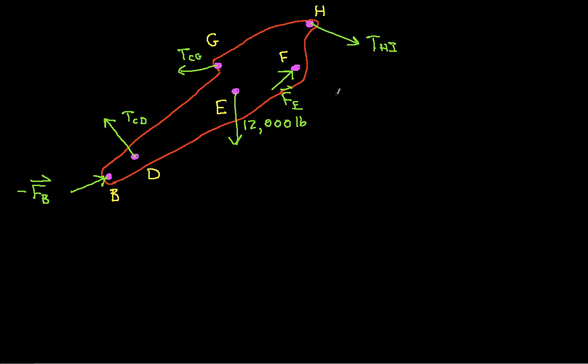And so we need to do a lot of computation now to, first off, get the sum of the moments equal to zero. And again, if I do the sum of the moments around this point F, then it gets rid of all the unknowns except THI, because the only unknowns are THI and this F sub F. So I'll take the sum of the moments around point F,